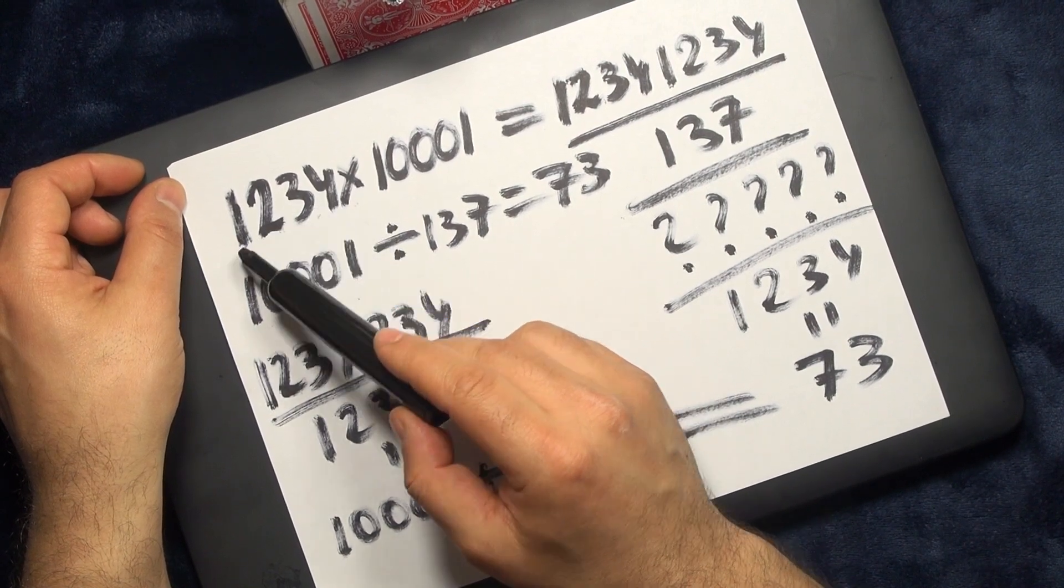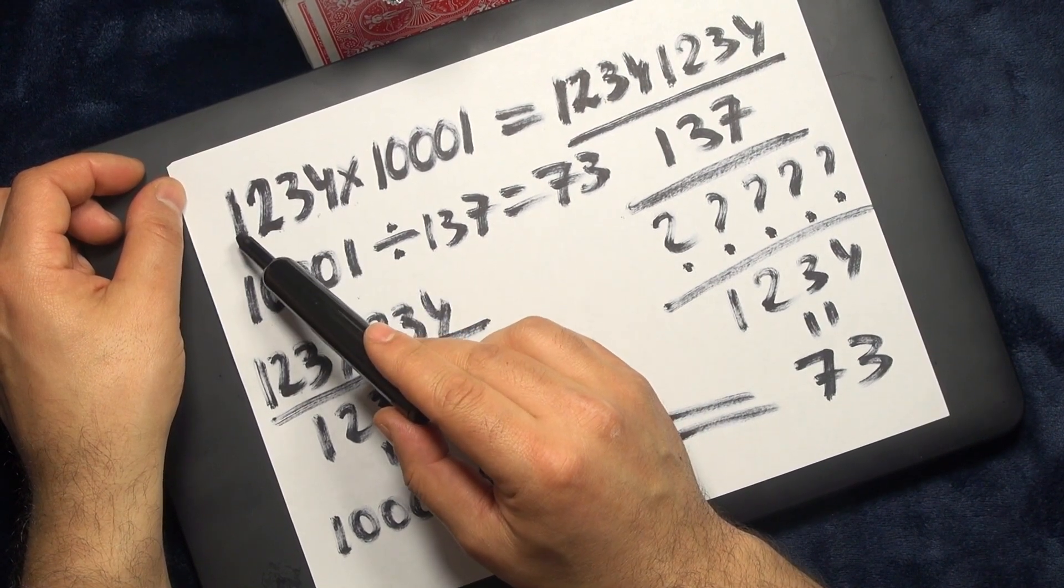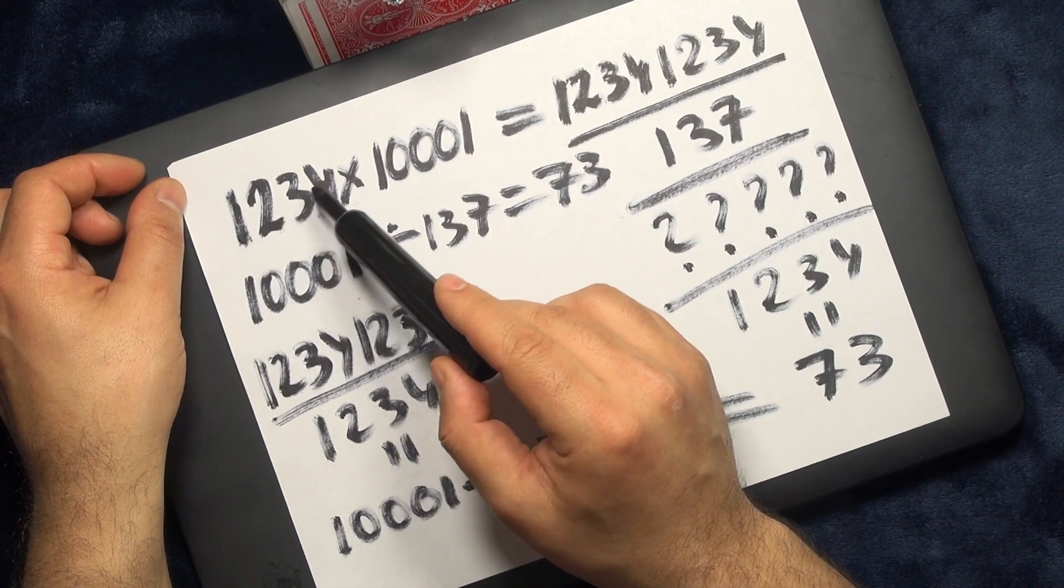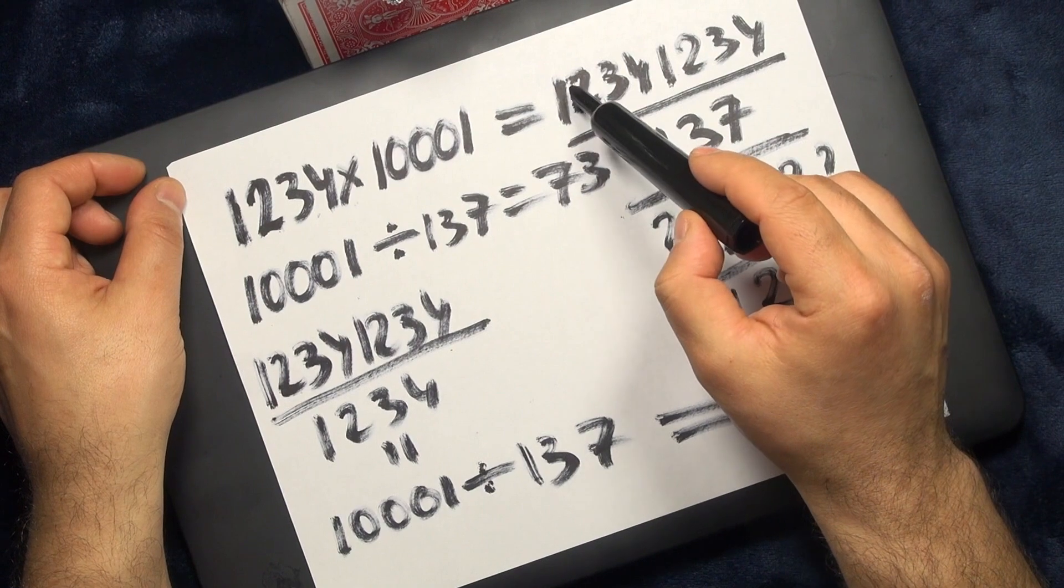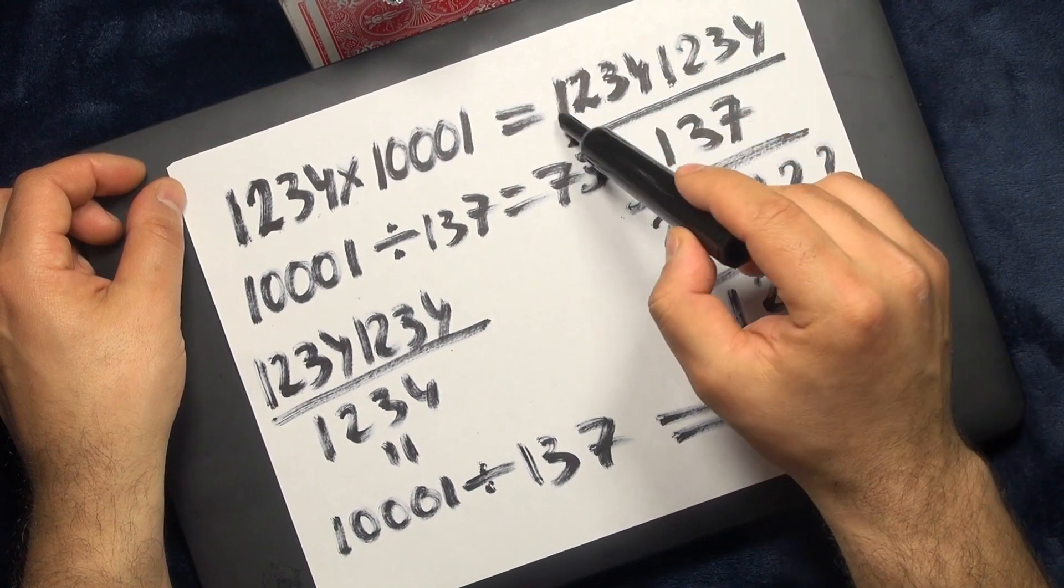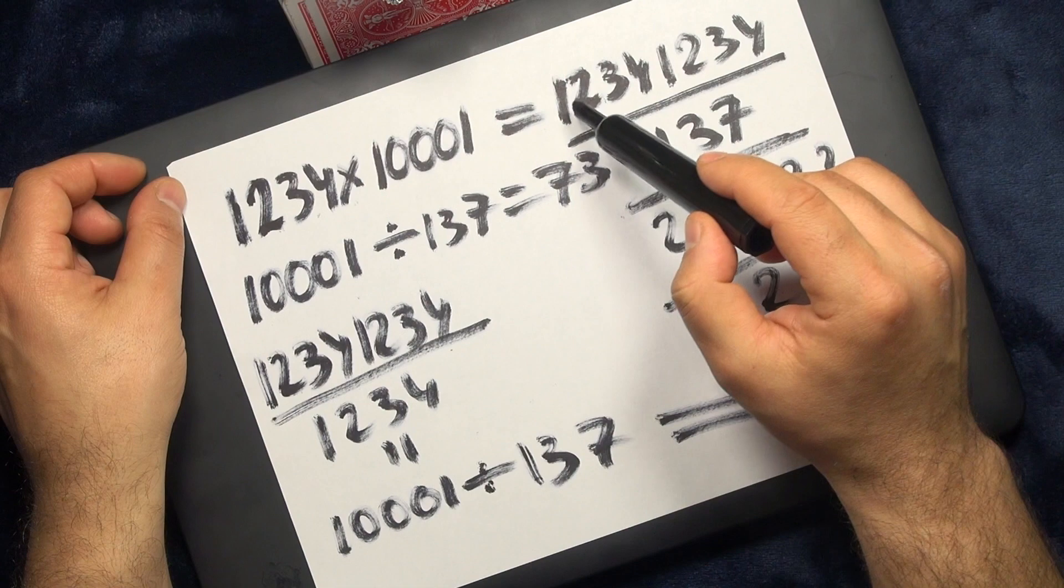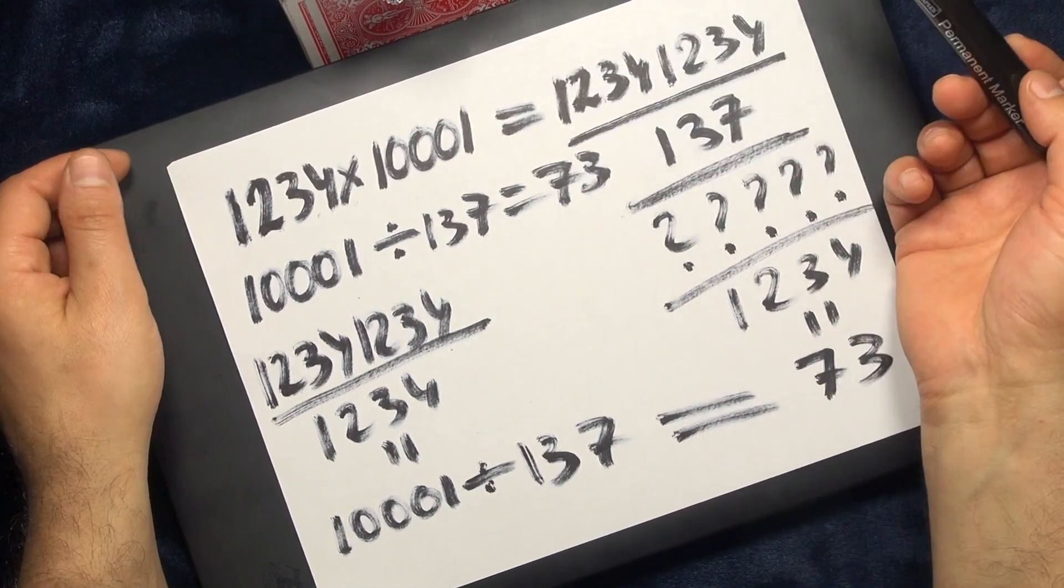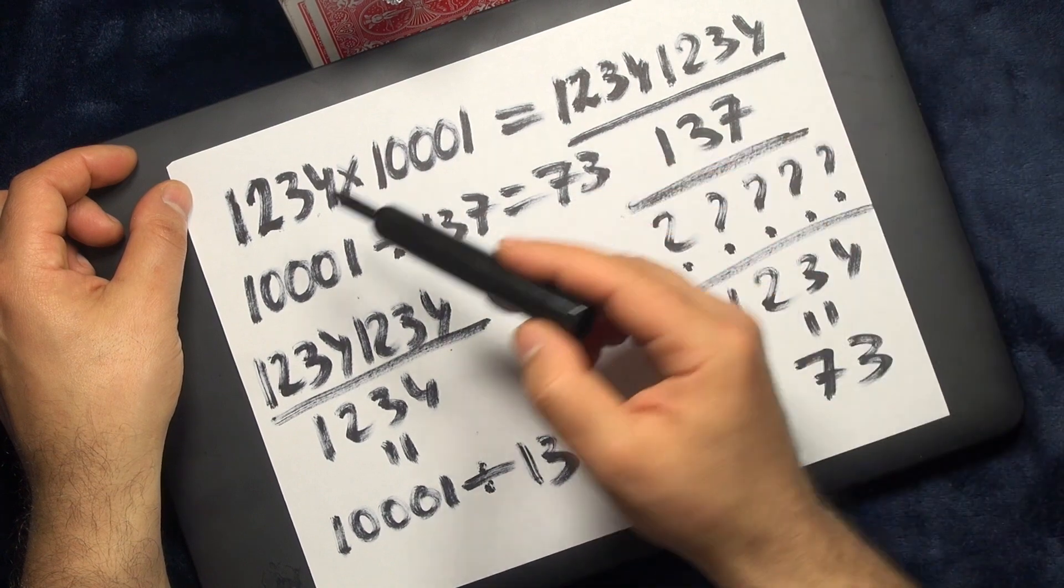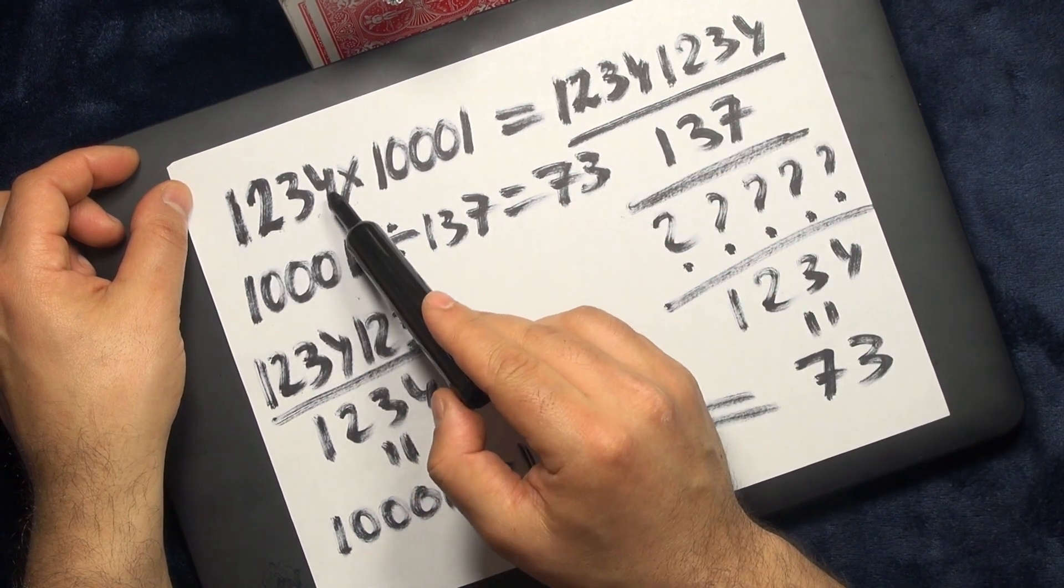First, I asked you to think of any four-digit number. For example, you thought about 1234. Then I asked you to enter the number twice into the calculator so it becomes 12341234, an eight-digit number. But it would be the same if I asked you to multiply your four-digit number by ten thousand and one.